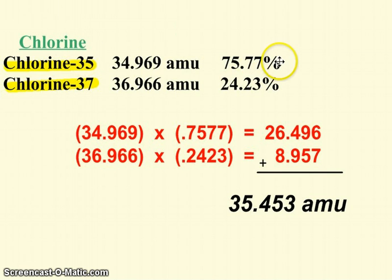75% of all the chlorine on the planet is chlorine-35. 24% is chlorine-37. So when you take the mass of the isotopes, multiplied by the percent abundance as a decimal, moving it two to the left, then you see each isotope's contribution to the atomic mass.